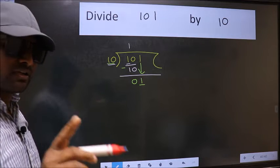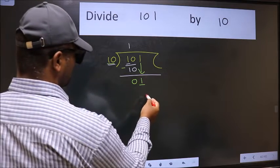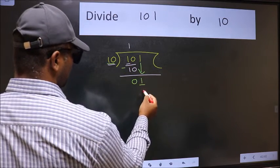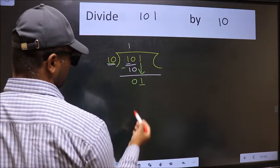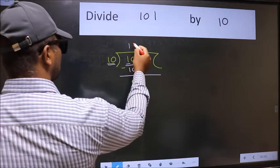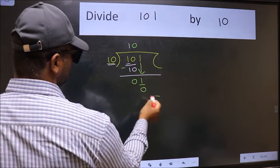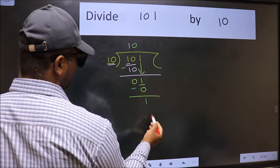Instead of that, what you should think of doing is, which number should we take here? If I take 1, we will get 10. But 10 is larger than 1. So what we should do is, we should take 0. So 10 into 0, 0. Now we should subtract. We get 1.